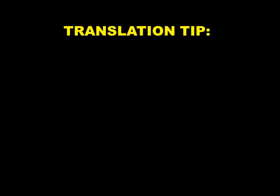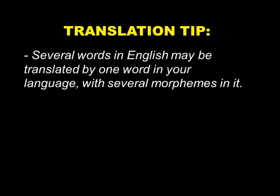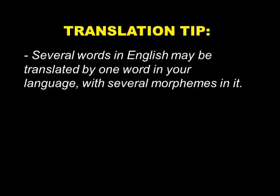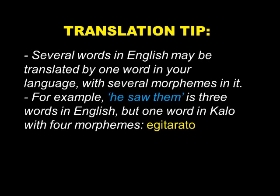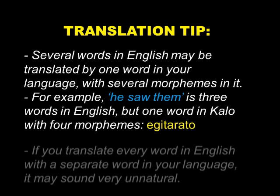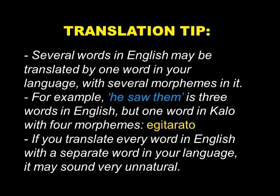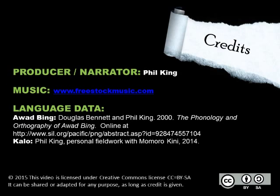Finally, a translation tip. When you are translating, remember that several words in English might only be translated by one word in your language with several morphemes in it. For example, 'he saw them' is three words in English but just one word in Kalo with four morphemes: 'egitarato'. If you translate every word in English with a separate word in your language, it may sound very unnatural. We need to make sure the right meaning is there for the words in English, but some of those meanings might be in different morphemes within one word in your language.